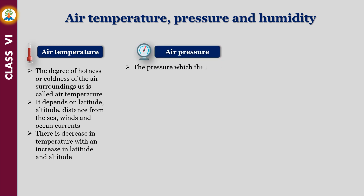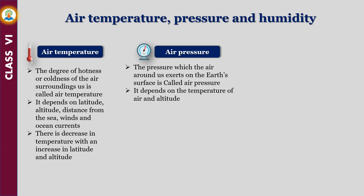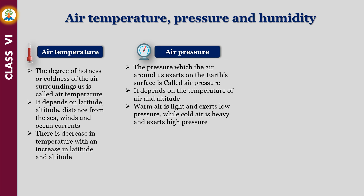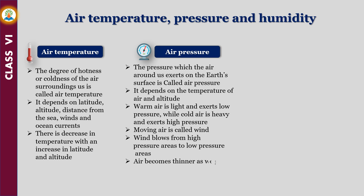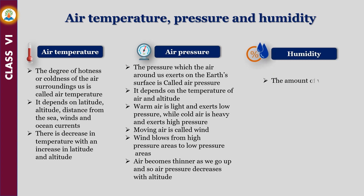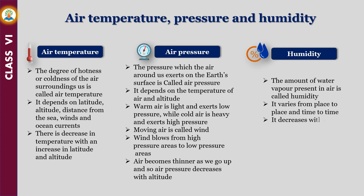The pressure which the air around us exerts on the earth's surface is called air pressure. It depends on the temperature of air and altitude. Warm air is light and exerts low pressure, while cold air is heavy and exerts high pressure. Moving air is called wind. Wind blows from high pressure areas to low pressure areas. Air becomes thinner as we go up, so air pressure decreases with altitude. The amount of water vapor present in the air is called humidity. It varies from place to place and time to time, and it decreases with altitude.